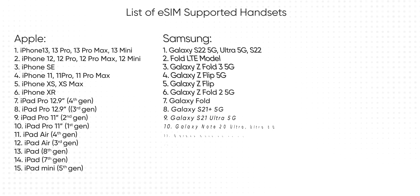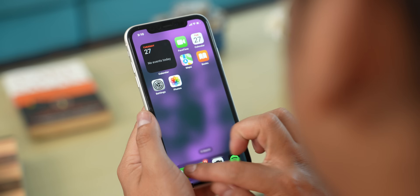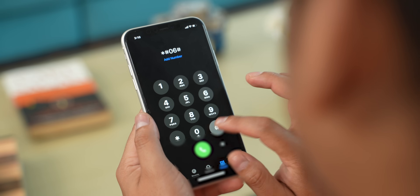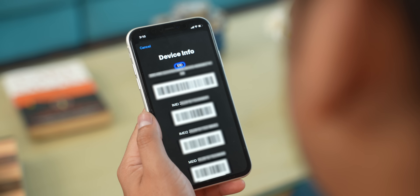eSIM is simple, but flagship phones have eSIM support, and mid-range or budget smartphones also have eSIM support. For Nepal Telecom, you should be able to see a screen showing which phones are compatible with eSIM. If you have an eSIM-compatible phone, you can just dial *#06# and if the IMEI number screen shows an EID — or Embedded Identification Document Number — that means your device supports eSIM.